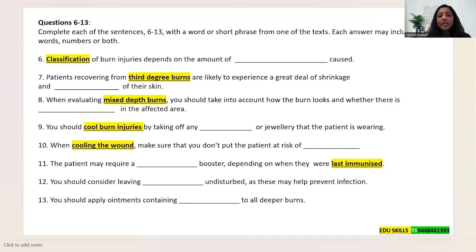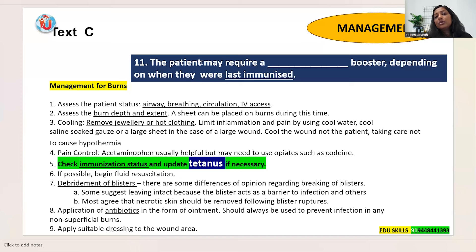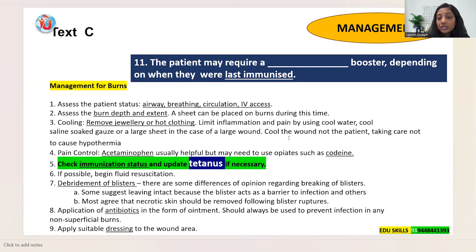Question 11: 'The patient may require a ___ booster depending on when they were last immunized.' Immunization is in Text C. The text says: 'check immunization status and update tetanus if necessary.' The answer is: tetanus. Note: the keyword 'booster' does not appear in the text, so searching for 'booster' will not help — find the correct keyword instead.